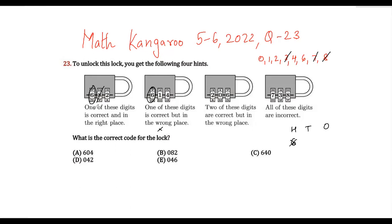So then it is not 6. So one of these digits is correct and in the right place. So that means 2 is the correct digit and it is in the right place. So we have found this 2.